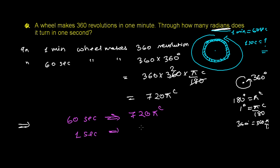So one second makes 720 pi divided by 60 radian. And now, you can cancel the 0 and 0 and then 6 times 12. So finally, you get 12 pi radian.